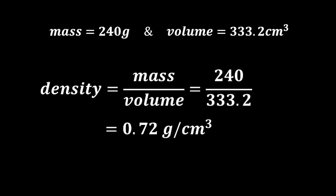So density, which is mass over volume, is 240 divided by 333 equals 0.72 grams per cubic centimeter. This is less than the density of water and therefore it will float.